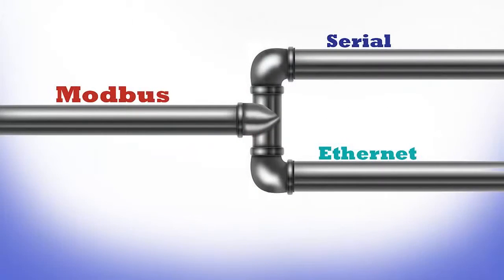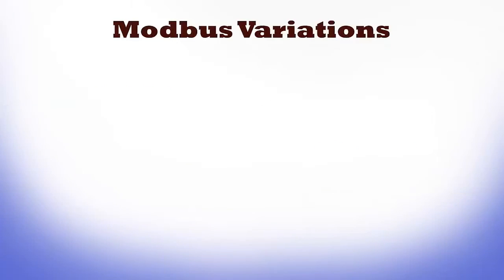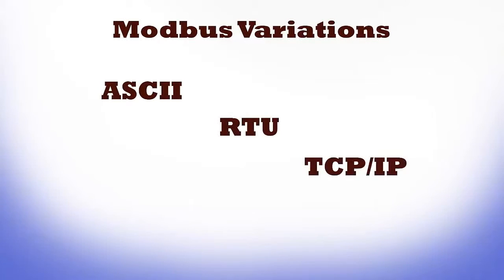Modbus can be used over Ethernet as well as serial cable. There are three major types or variations of the Modbus protocol: Modbus ASCII, Modbus RTU, and Modbus TCP IP.